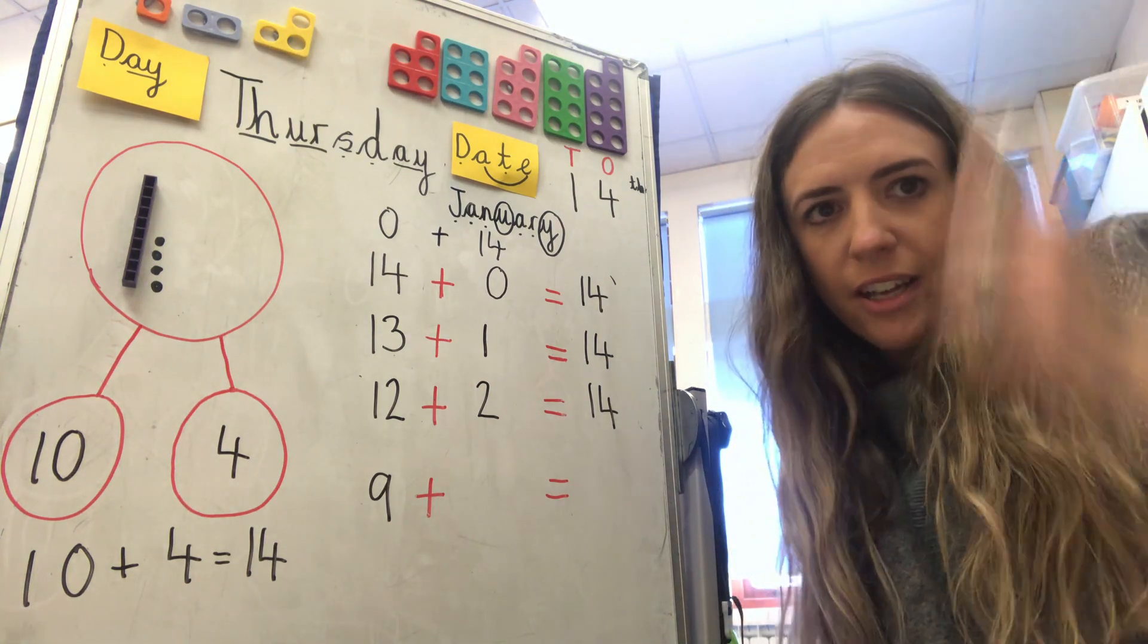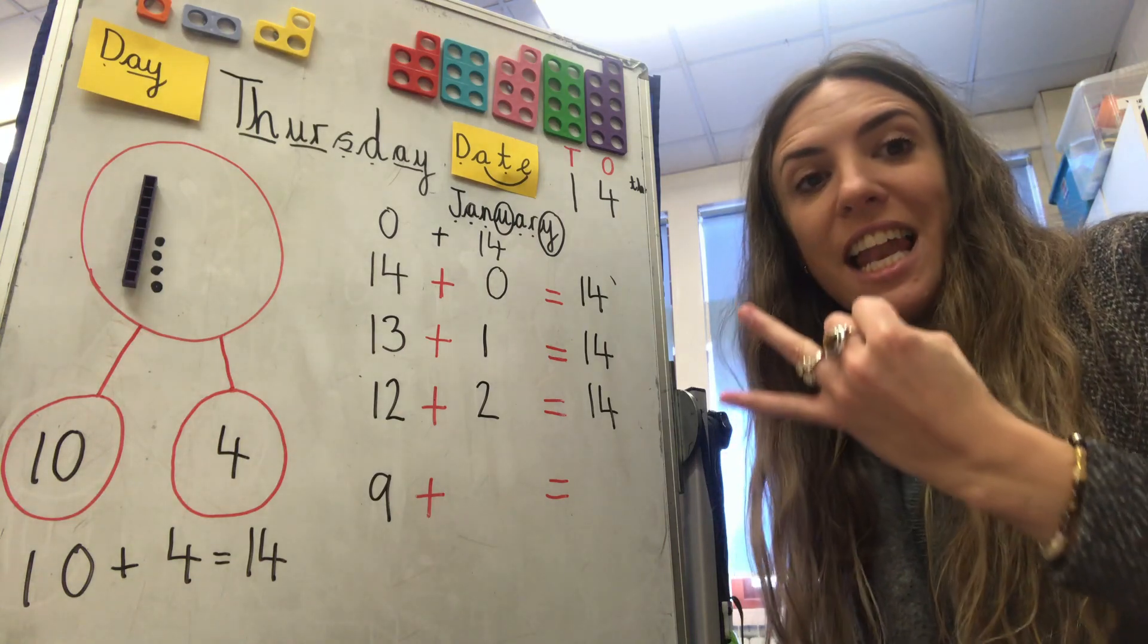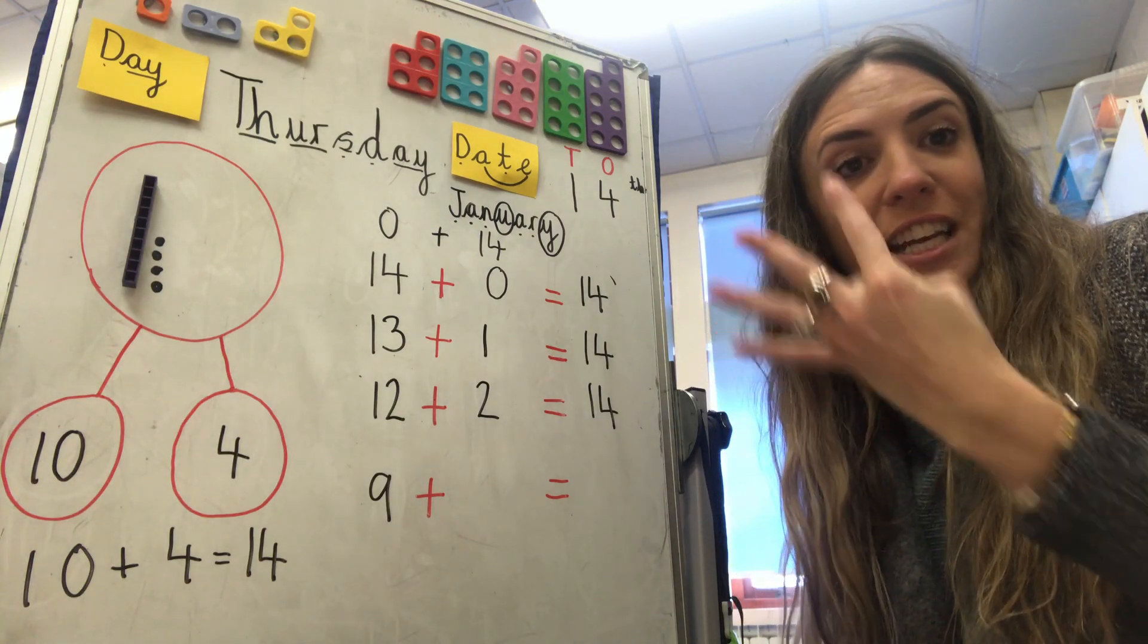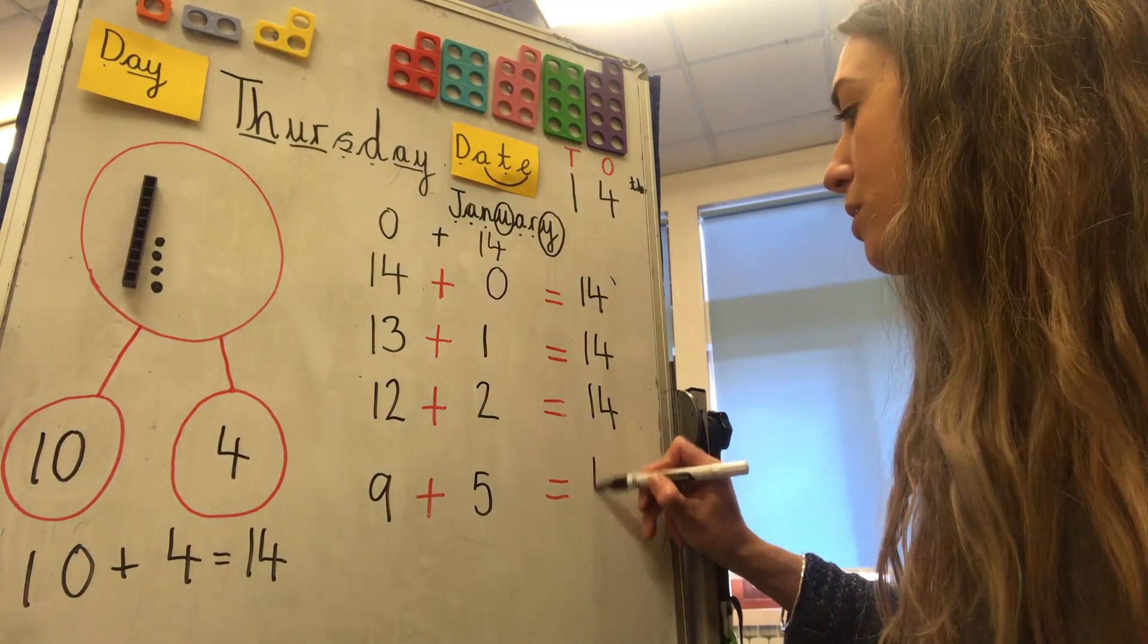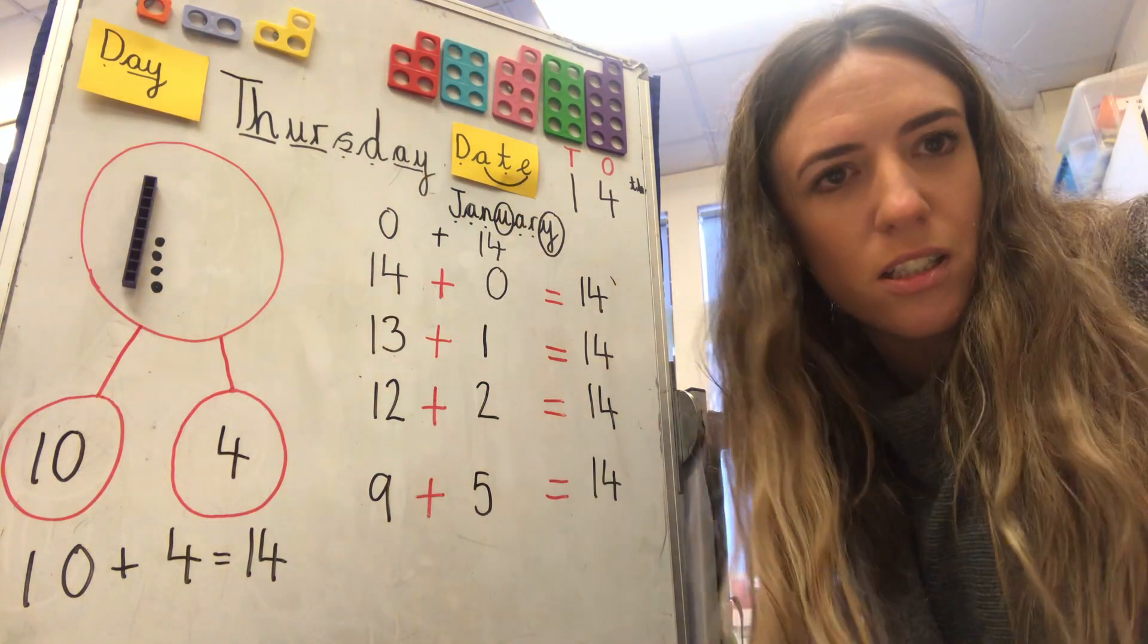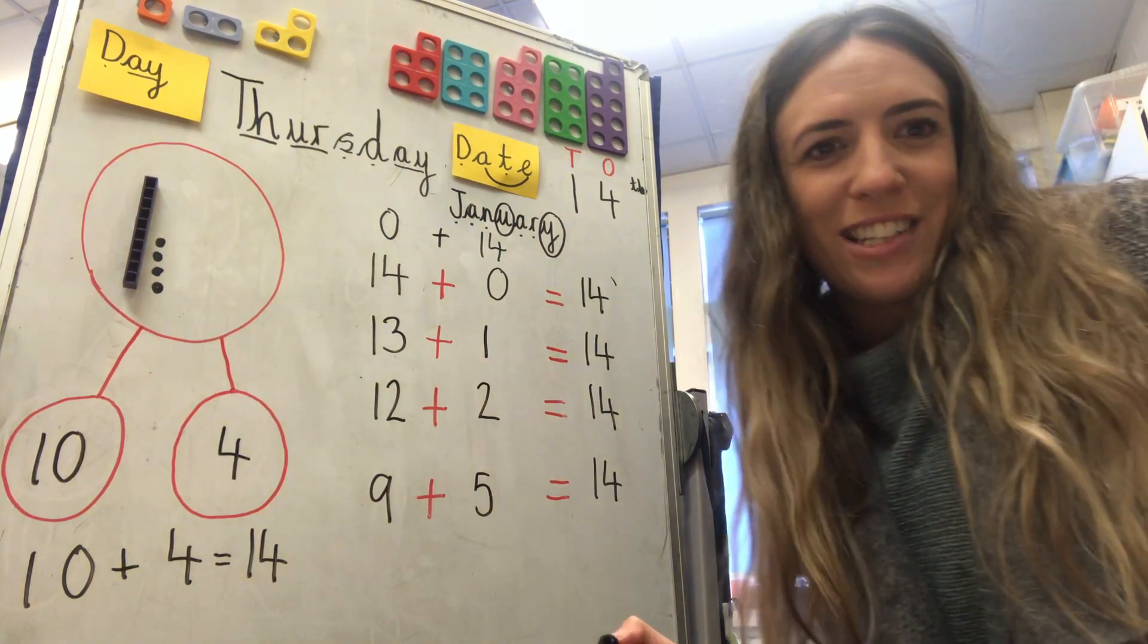Put nine in your head. Nine, ten, eleven, twelve, thirteen, fourteen. We need to add five more. Equals fourteen. Super. Super addition. Well done.